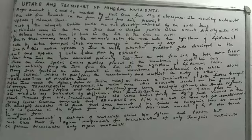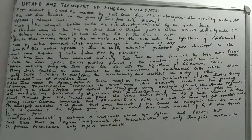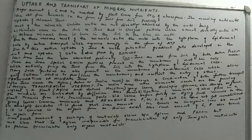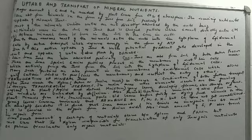Remember, calcium does not get remobilized. The four main elements which get remobilized are phosphorus, nitrogen, sulfur, and potassium, but calcium does not. Nitrogen is also mobilized mainly in organic form as amino acids, and a very little amount is mobilized in inorganic form. Some small amount of sulfur and phosphorus are also transferred in organic form. So the three elements that remobilize in organic form are sulfur, phosphorus, and nitrogen.